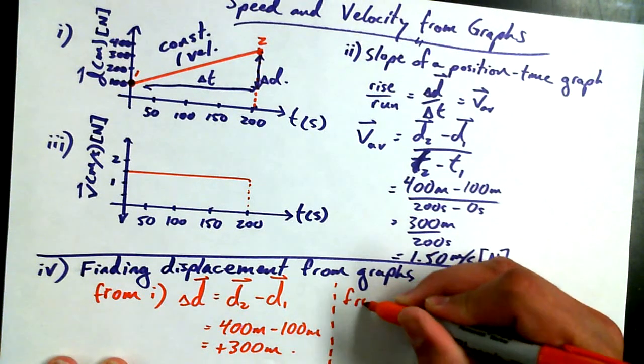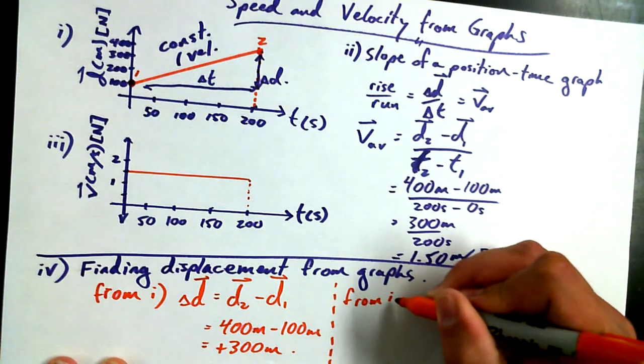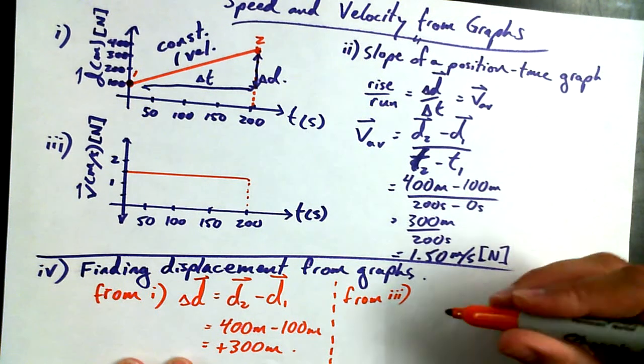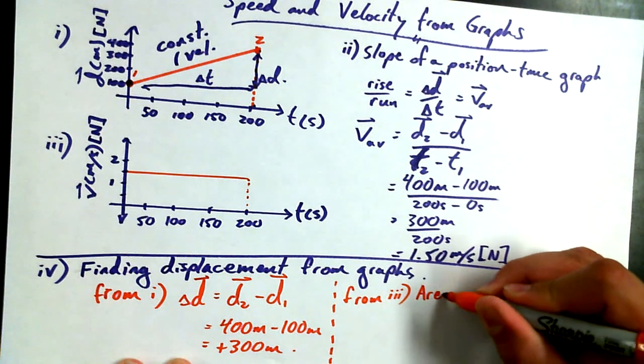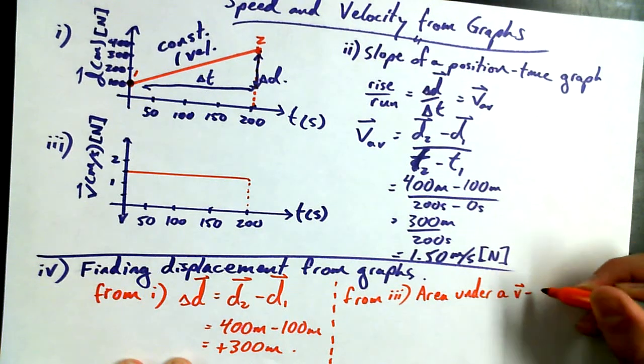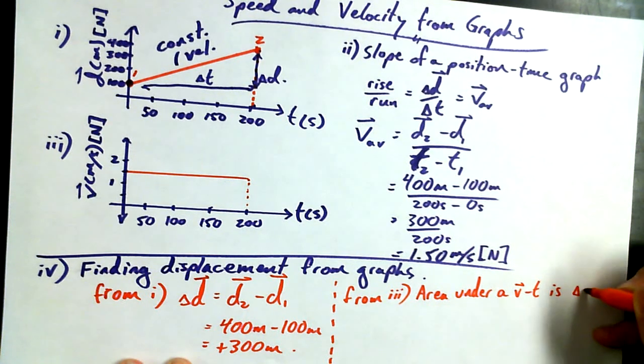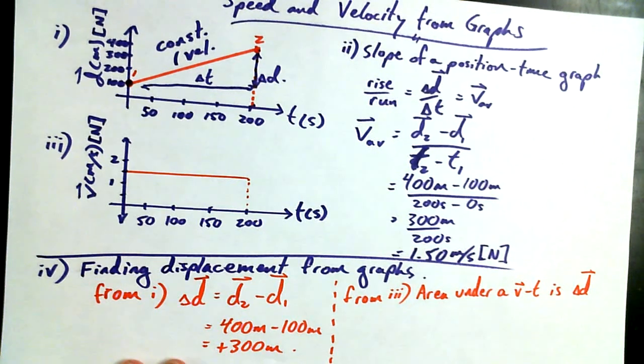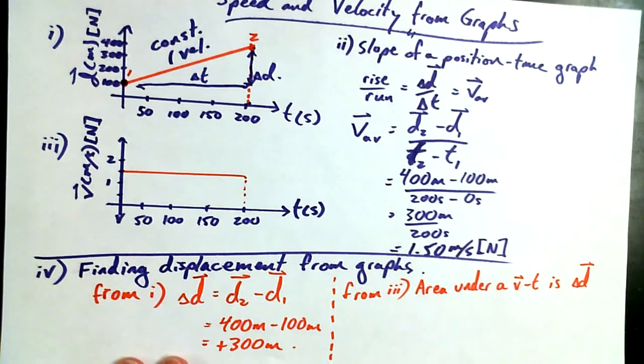I want to try and do it now from graph III. Even if I never even showed you graph I, I could find displacement by looking at graph III. And I could do it fairly easily with this little rule. The rule is this: Area under a VT is displacement. I want to show you what I mean by that.